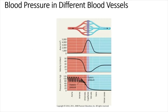Blood pressure decreases as blood enters arteries and arterioles because arteries and arterioles are smaller than the aorta. The aorta branches into arteries and arteries branch into arterioles. Arterioles have a high total cross-sectional area, and this slows down blood flow velocity.